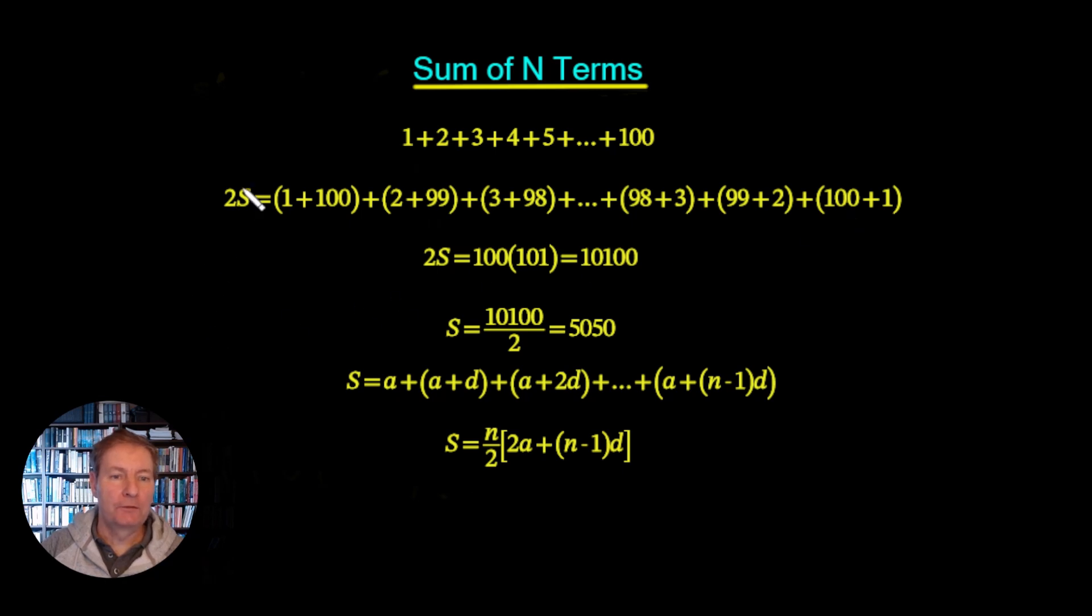So we're going to have 2 times the sum is going to give us this value here. So we could say then 2 times the sum is going to be, well this is a constant, 101, 101, 101. So it's going to be 100 times 101, which is 10,100. But again that's twice as much as we require. So we divide it by 2 and we get the final answer, 5050. So that's a nice, neat, quick way of generating a result.